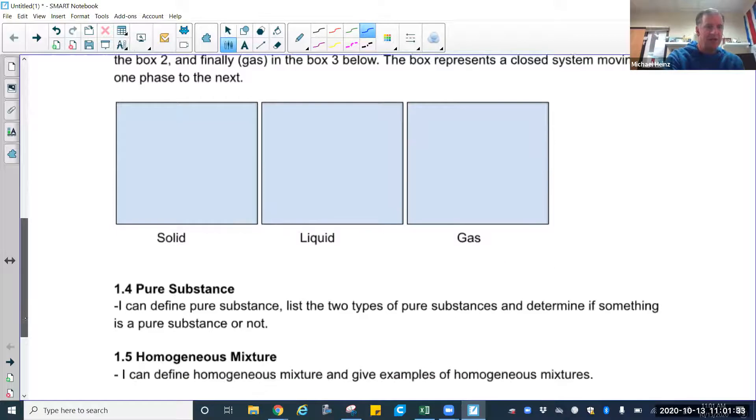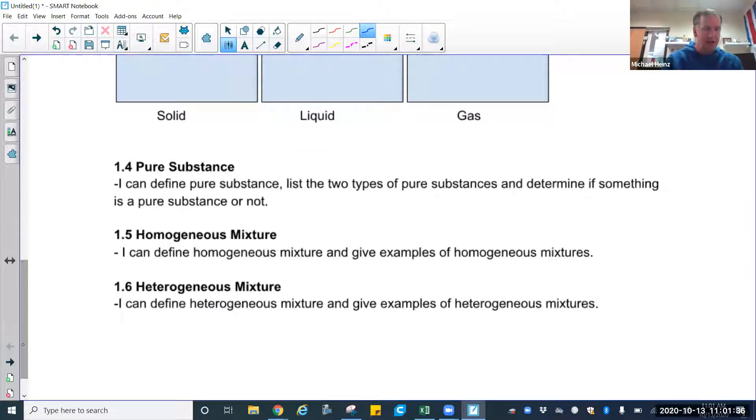Then we get into the idea of classification of matter. One thing I want to point out, just review - if you didn't catch it the first time, we'll review again. A pure substance - the two things - we're going to look at element, compound, and mixture. Pure substances are only elements. And as a reminder, there's approximately 118 of those from the periodic table.